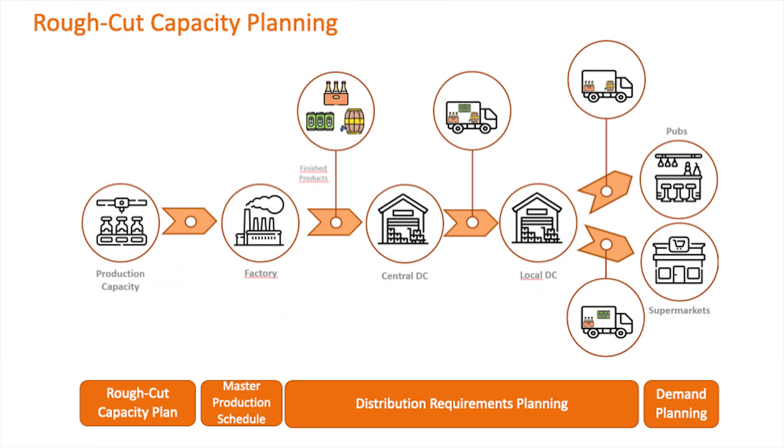The goal of supply chain planning is to provide a realistic supply plan. Therefore, we have to consider realistic capacity constraints. This is where rough cut capacity planning comes in. RCCP verifies that you have sufficient capacity available to meet the capacity requirements for your master production schedules. RCCP is a long-term capacity planning tool that production can use to negotiate changes to the master schedule in order to align it to a realistic available capacity.